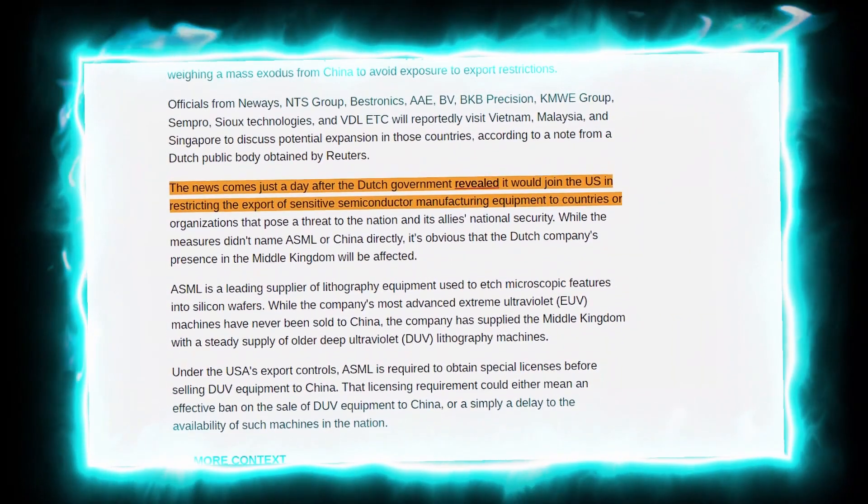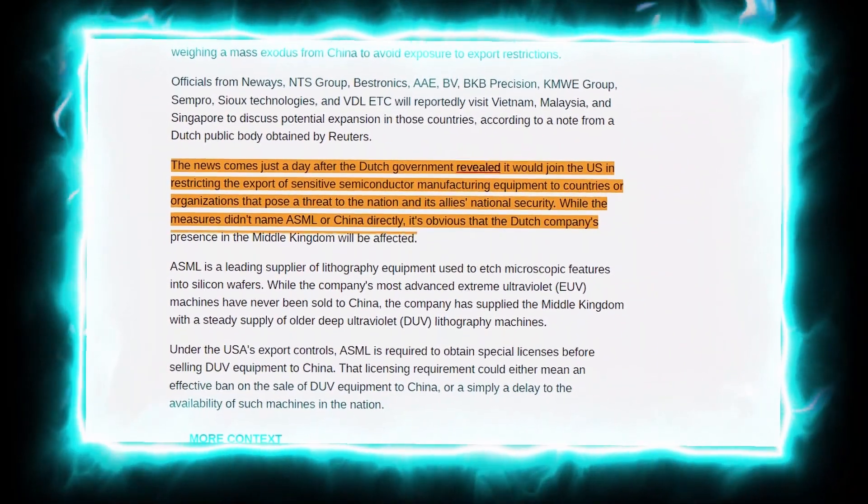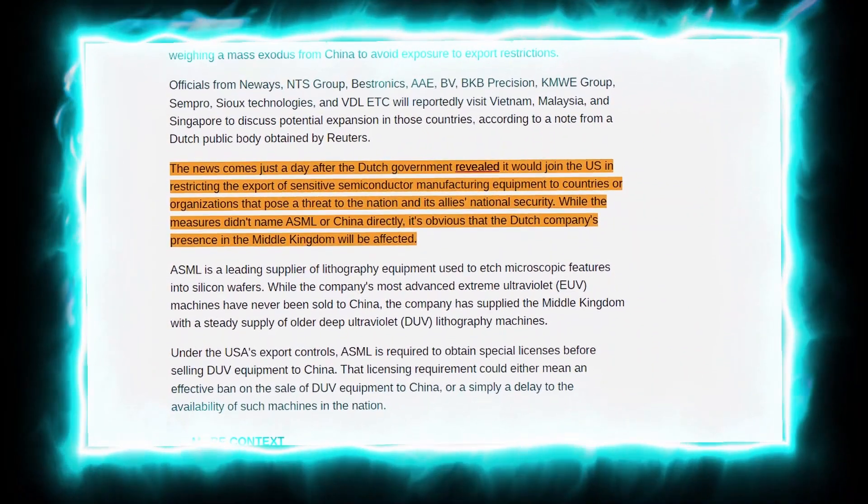Recently, the Dutch government revealed they'd be working on America's export restrictions to nations that could threaten national security, and guess what, more laws have reportedly been put in place.